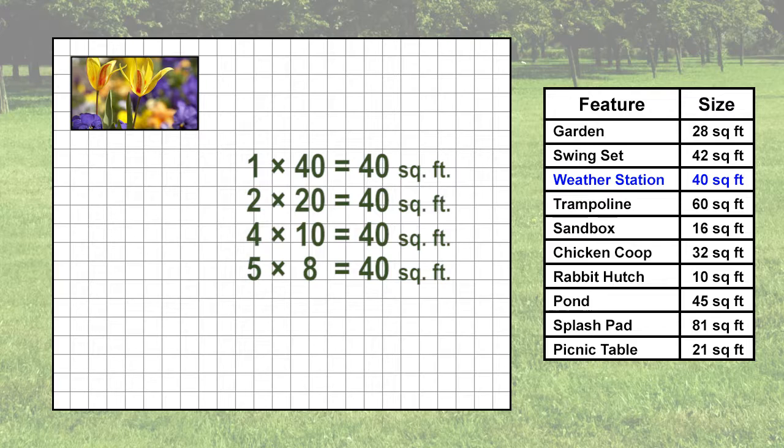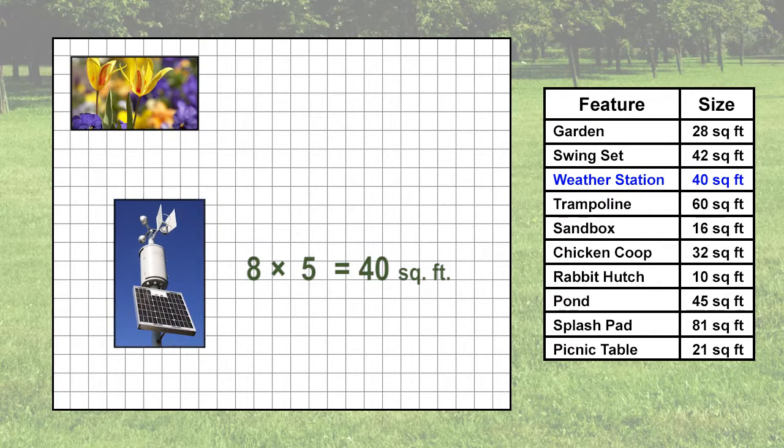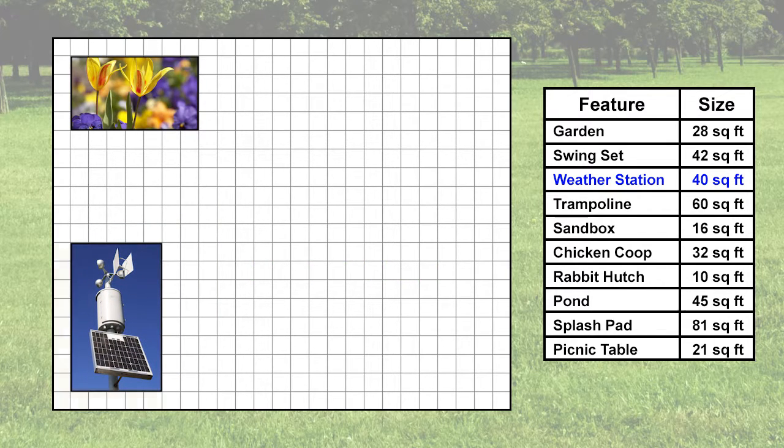And 5 times 8. Let's turn 5 times 8 around and have 8 times 5 as the area for the weather station and place it in the bottom left corner, remembering to leave 1 foot from the edge of the graph paper.